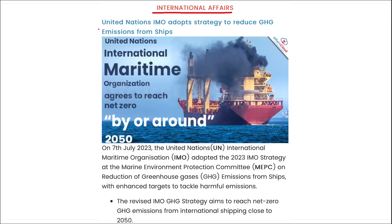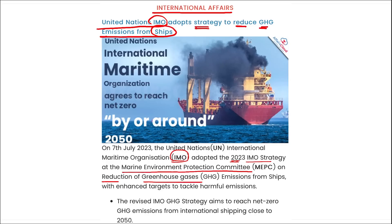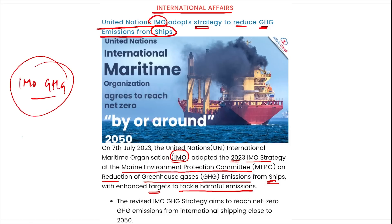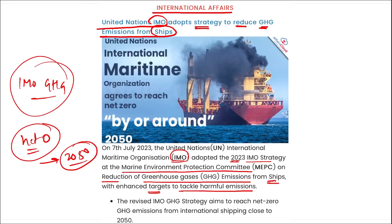Moving to international affairs: the United Nations International Maritime Organization has adopted the 2023 IMO strategy at the Marine Environment Protection Committee on the reduction of greenhouse gas emissions from ships with enhanced targets to tackle harmful emissions. The revised IMO greenhouse gas strategy aims to reach net-zero GHG emissions from international shipping by 2050.